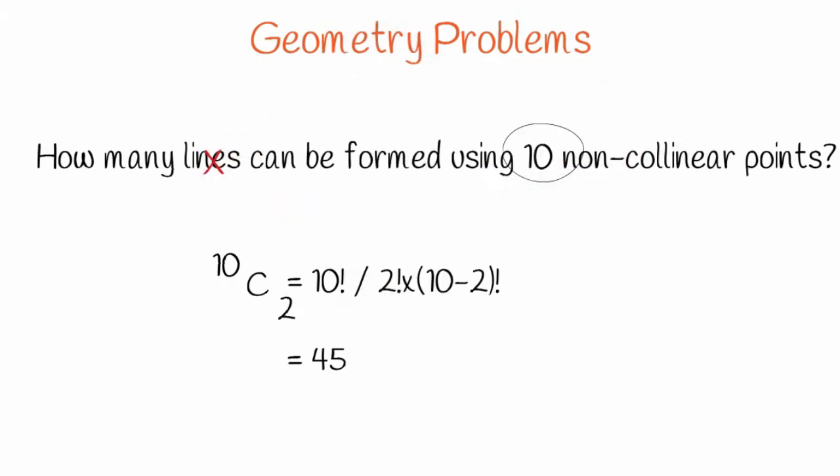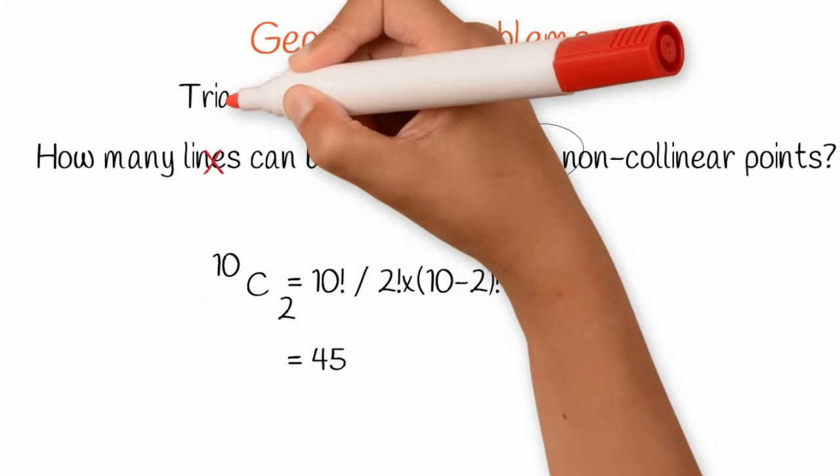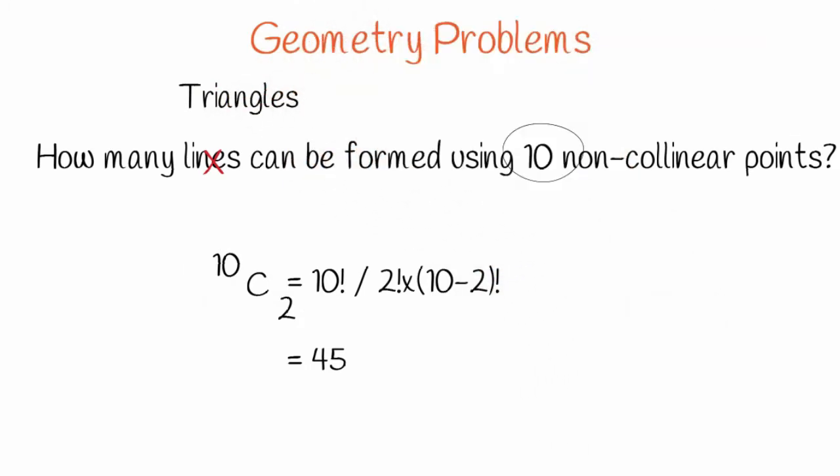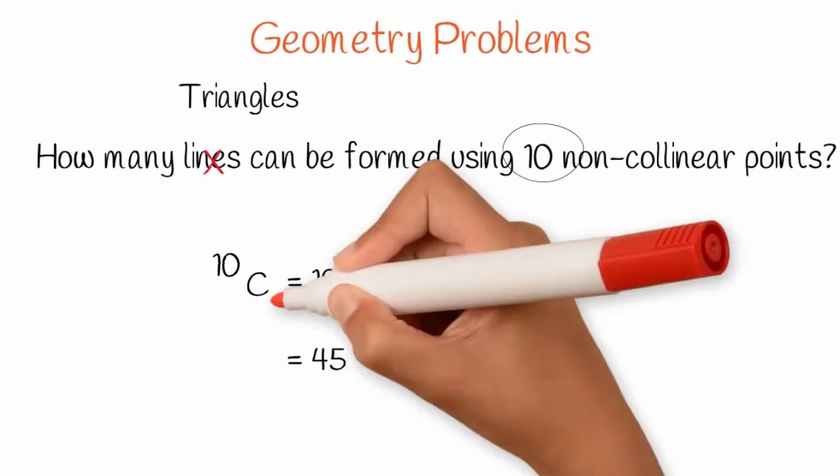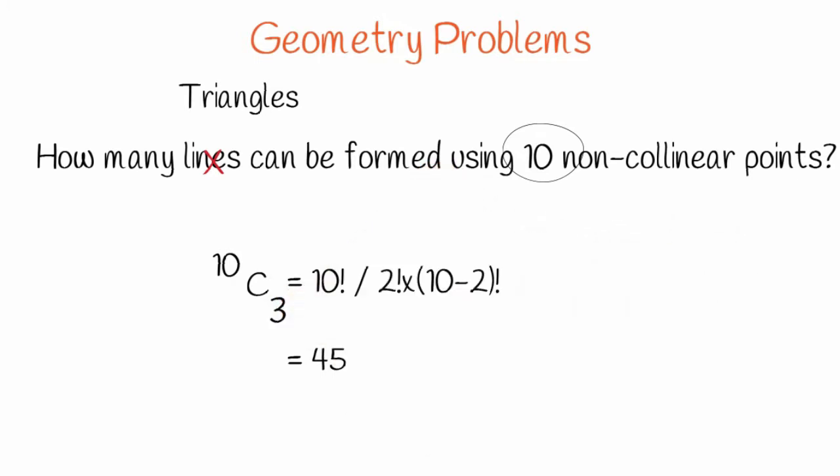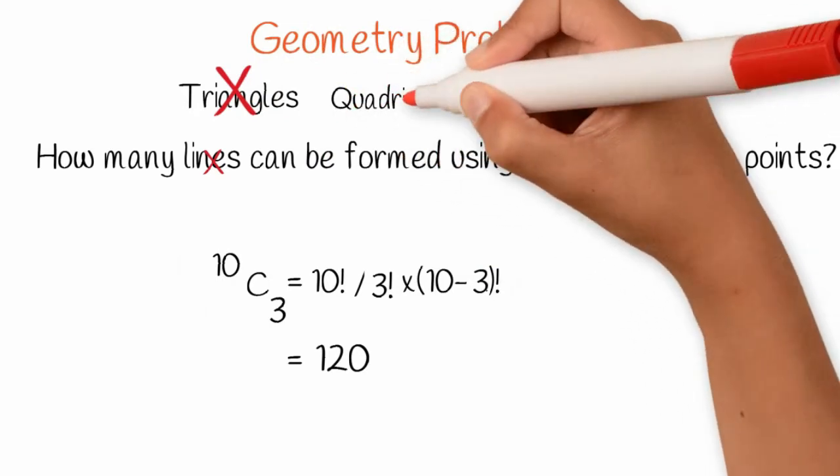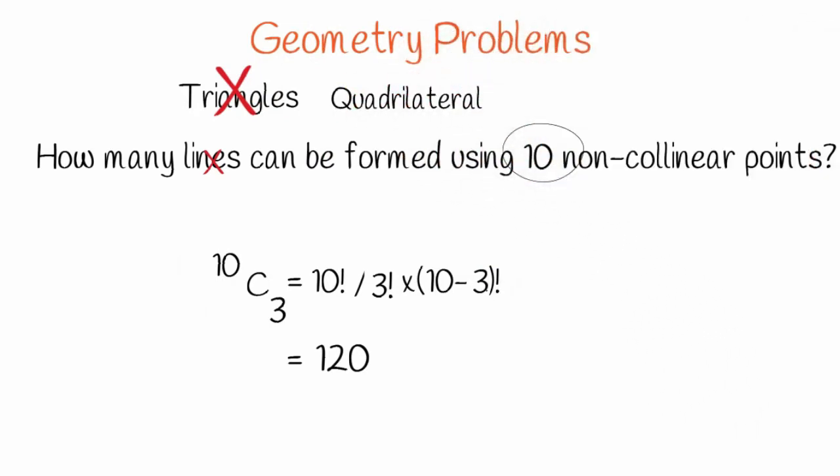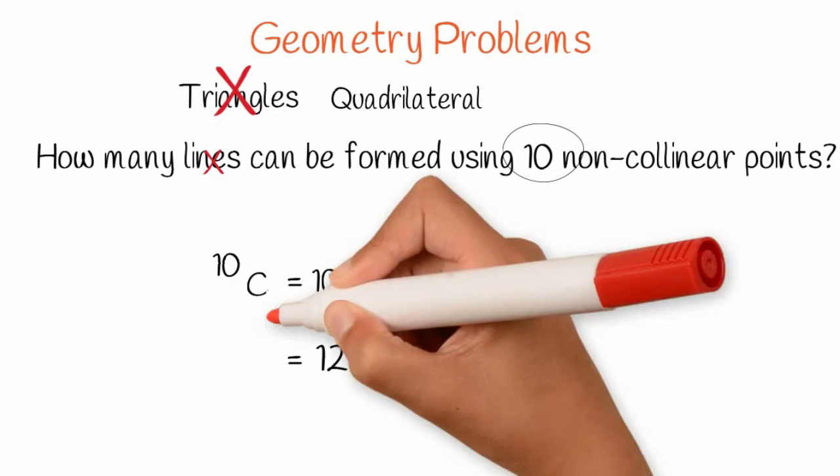Let's modify the problem. For example, how many triangles can be formed from 10 non-collinear points? Simple answer is 10C3. Similarly, how many quadrilateral figures can be drawn from 10 non-collinear points? Yes, it is 10C4.